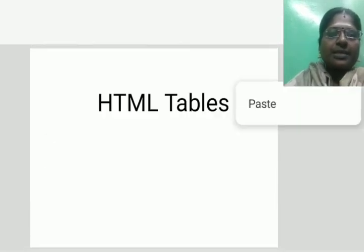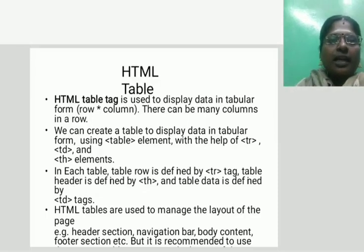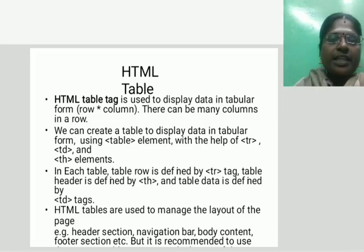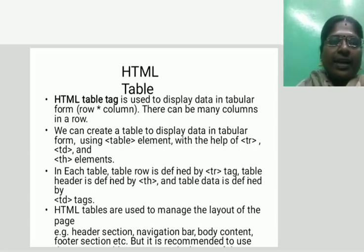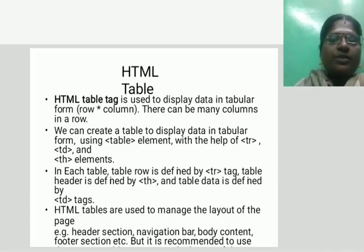HTML tables. The HTML table tag is used to display data in tabular form — that is, rows and columns. There can be many columns in a row. We can create a table to display data in tabular form using the table element with the help of the tr and th elements. In each table, a table row is defined by the tr tag. The table header is defined by the th tag, and table data is defined by the td tag. HTML tables are also used to manage the layout of the page.